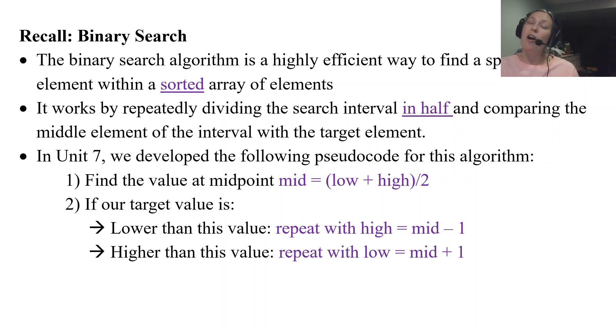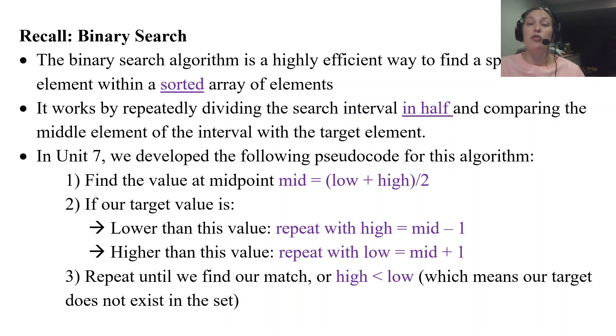If it's higher than our midpoint, we repeat with the low index changed because that means the value we're looking for is in the upper half of the list. We do that until we find our match or until our high is less than our low, which means that our target value does not exist. In that case our algorithm returns negative 1 indicating that we never found the target in our array. That was the pseudocode.